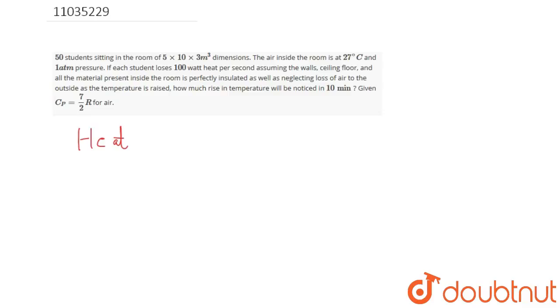Heat released by 50 students total per second we can calculate: 100 into 50 Joules per second, that is 5000 Joules per second. Because the question asks about after 10 minutes, if we calculate the total heat released in 10 minutes, we will have net heat content.